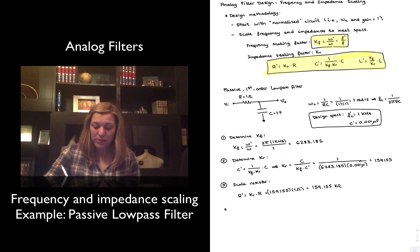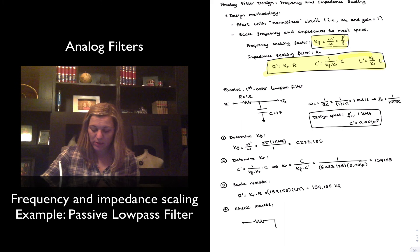I guess my last step is just to verify or check my results. And so if I redraw my circuit, but instead of the normalized circuit, now I have my circuit with all the final values. Where r prime is equal to 159 kilo ohms and c prime is 1 nanofarad or 0.001 microfarads.